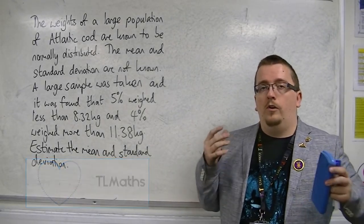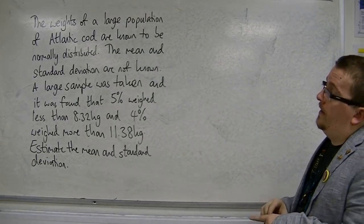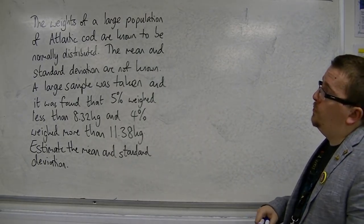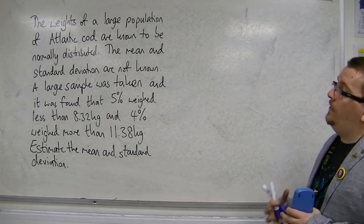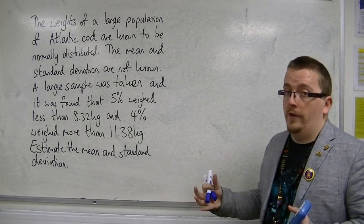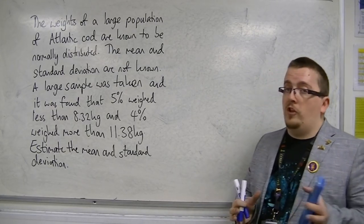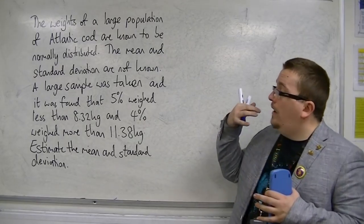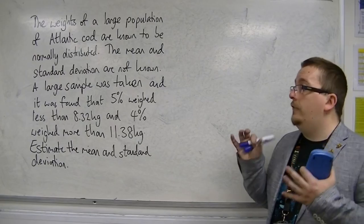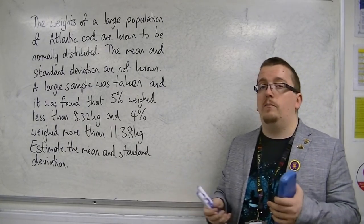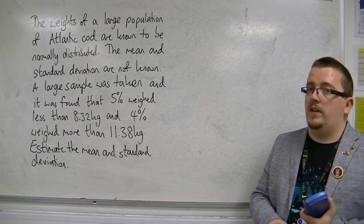In this third example of using the inverse norm, we have a problem like this. The weights of a large population of Atlantic cod are known to be normally distributed. The mean and standard deviation are not known. A large sample was taken, and it was found that 5% weighed less than 8.32 kilos and 4% weighed more than 11.38 kilos. Estimate the mean and standard deviation.